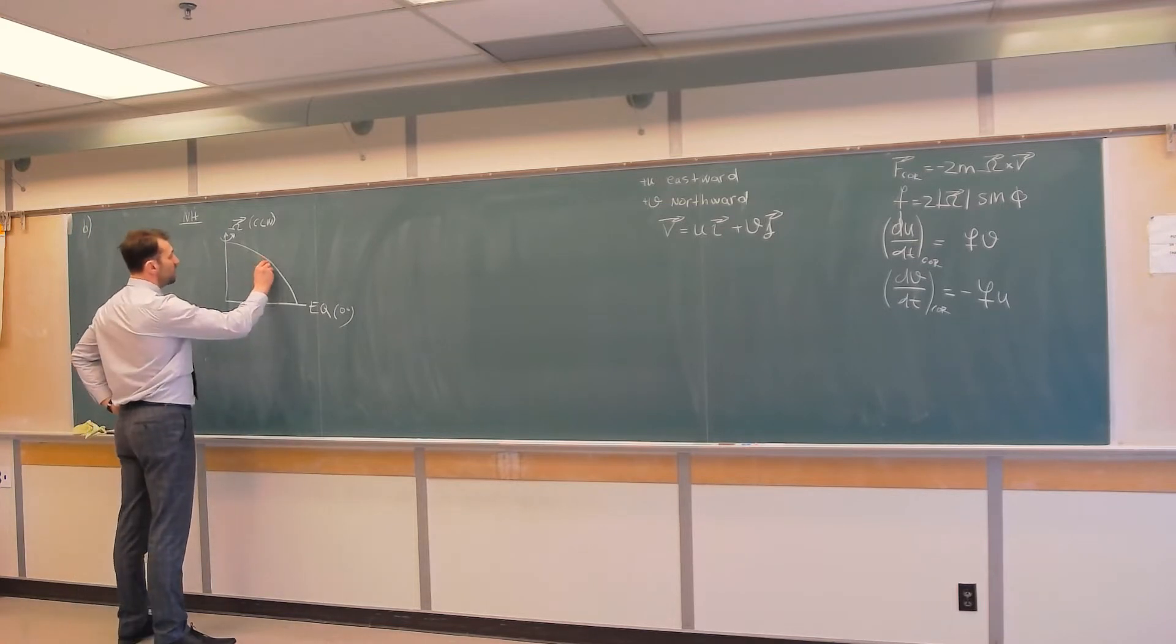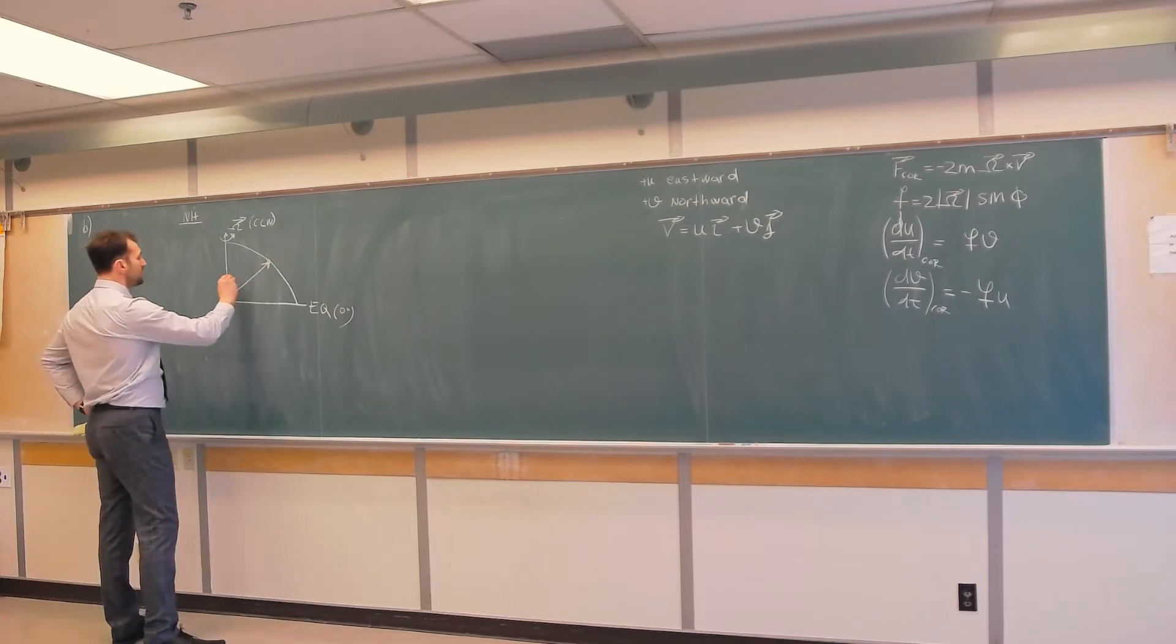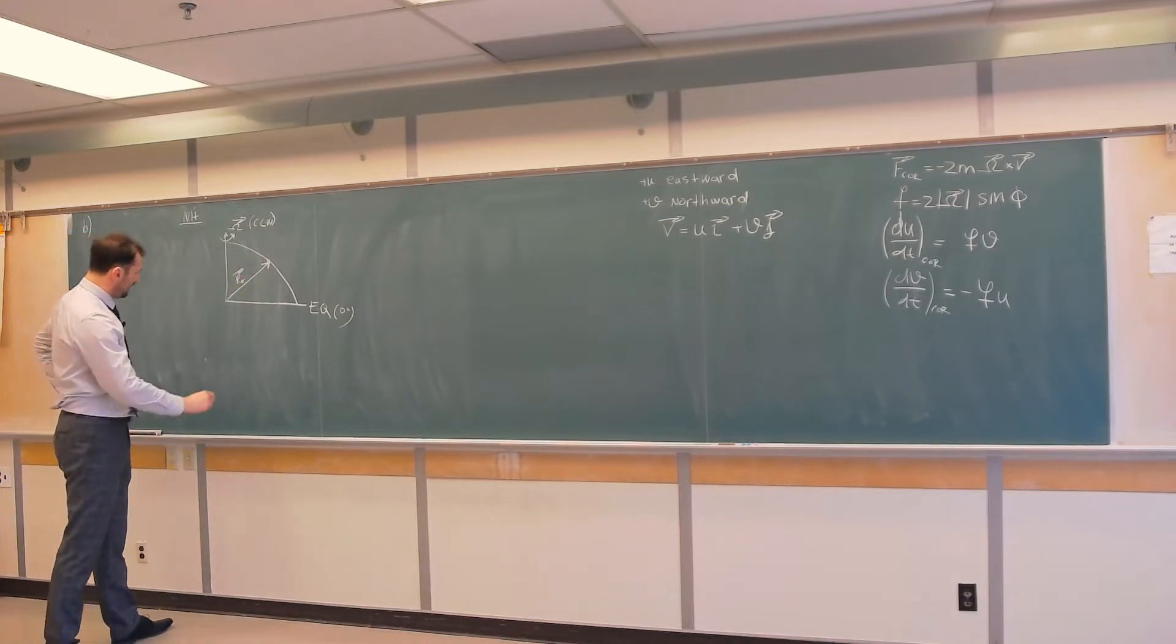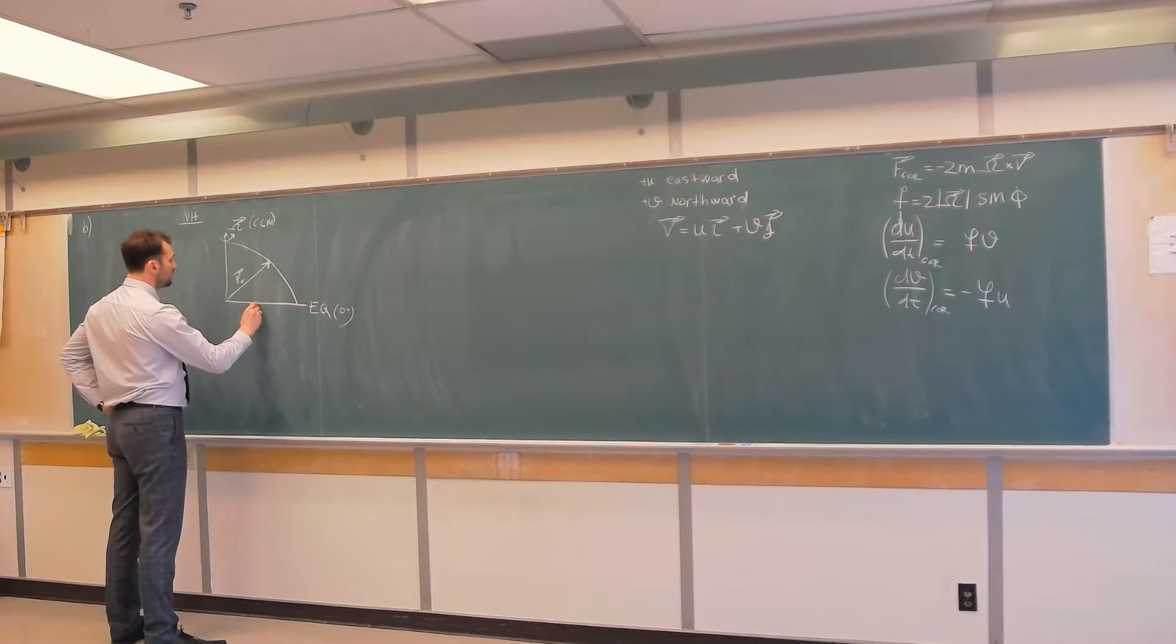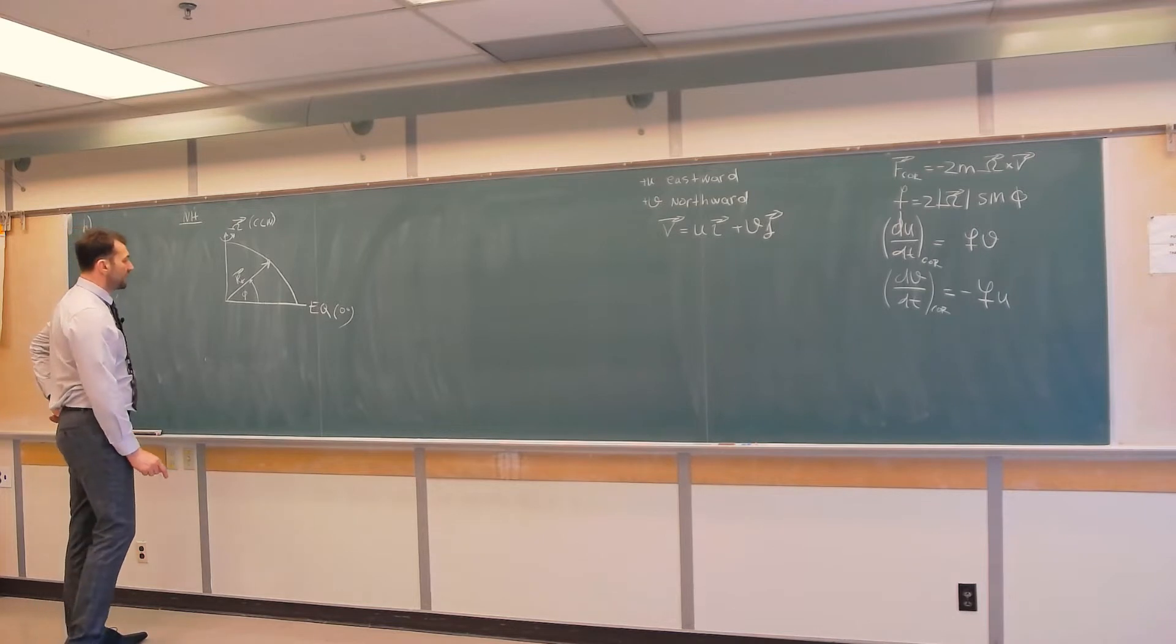Let's take one point over here on the surface of the Earth. Then this is r_e, radius of our beautiful planet. And this is the latitude of that point, phi, that you can also see in the equation for Coriolis parameter as well as two equations for accelerations.